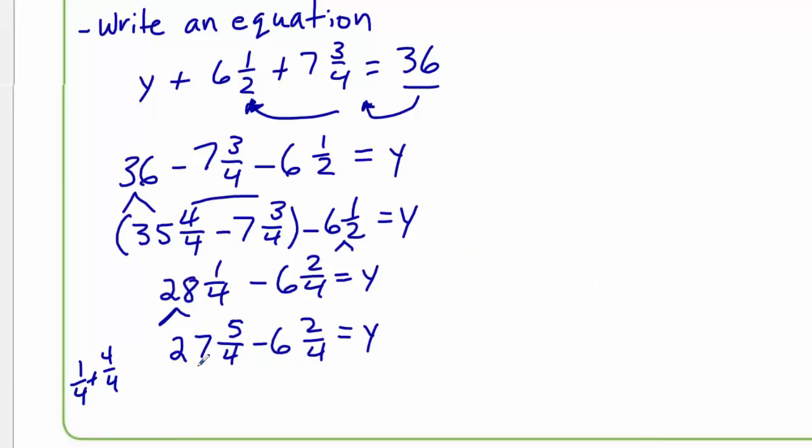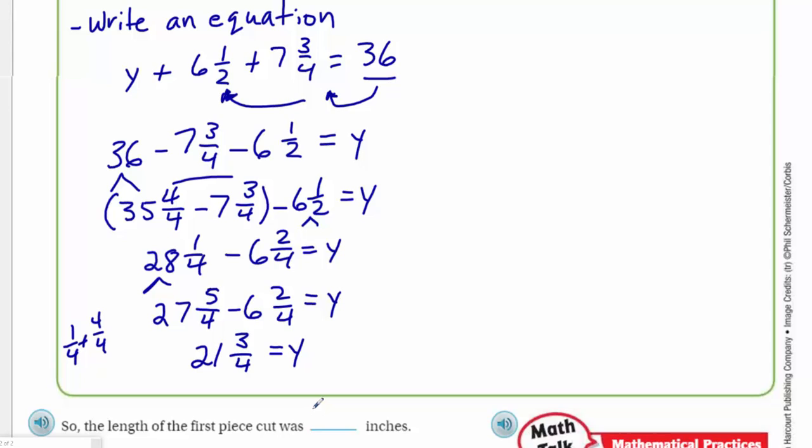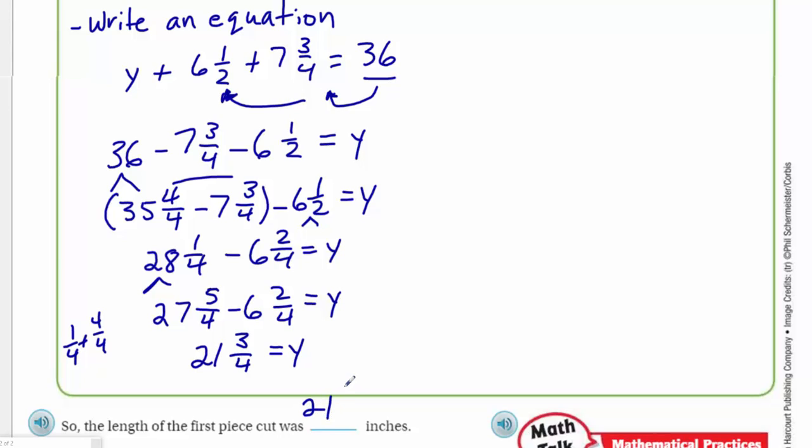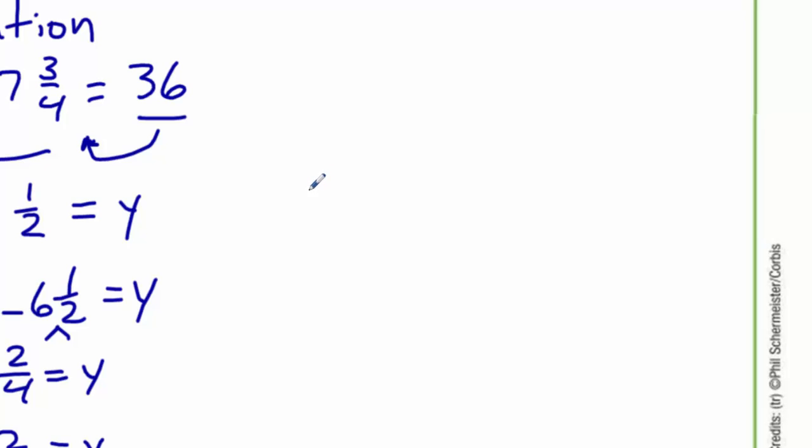Well, one fourth plus four fourths, right? I just want you to visually see that. It means that now I'm going to put five fourths here. I hope you're with me. And then minus my six and two quarters equals y. Now this makes it much easier. 27 minus six is 21. Five minus two equals three. I carry my fours. Just bring it over. That's all I do with that is equal to y. Therefore, the length of the first piece cut was twenty one and three quarter inches. Wow, it was really long. You look at the numbers now. That's where I come into my reasonableness. Is my answer reasonable?